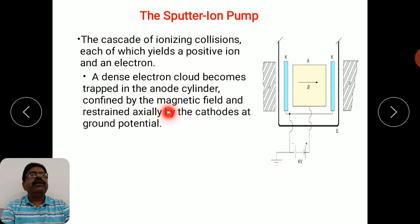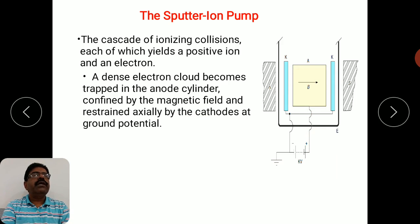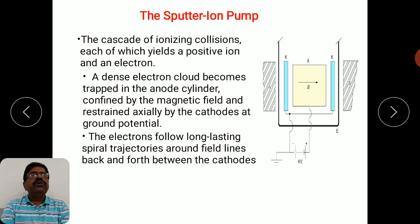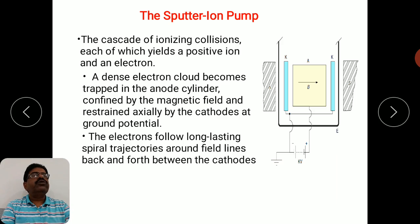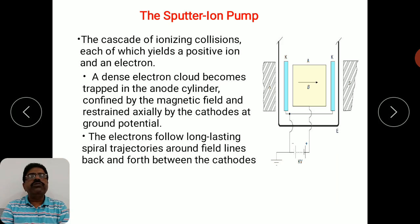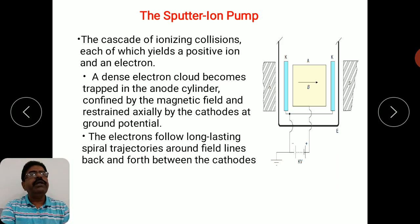The electron cloud is confined by the magnetic field and restrained axially by the cathodes at ground potential. The electrons follow long-lasting spiral trajectories around the field lines, moving back and forth between the cathodes, continuously colliding with gas molecules and ionizing them — producing a new electron-ion pair each time.